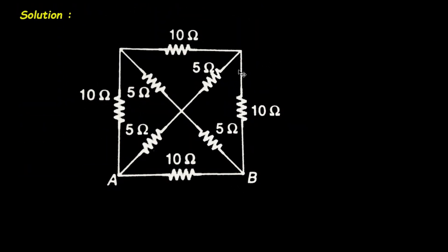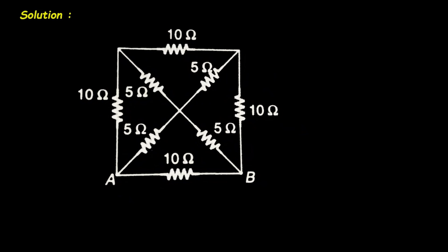First of all we will take this network. Now here we can see this is a symmetrical network or we have to apply rule of symmetry here. If we fold this network horizontally or vertically then we get the mirror image.